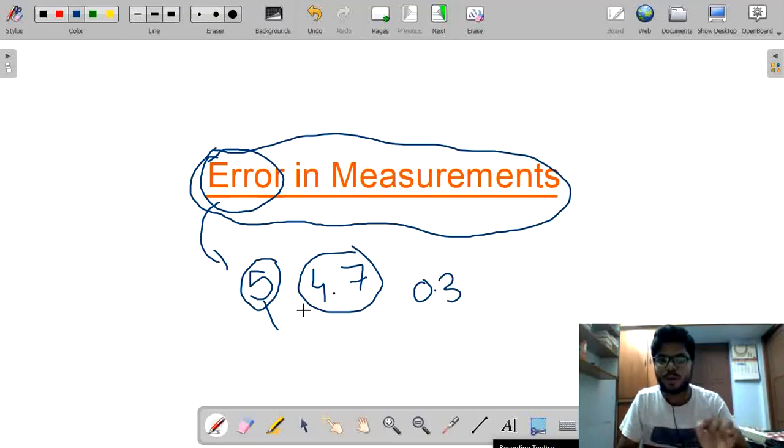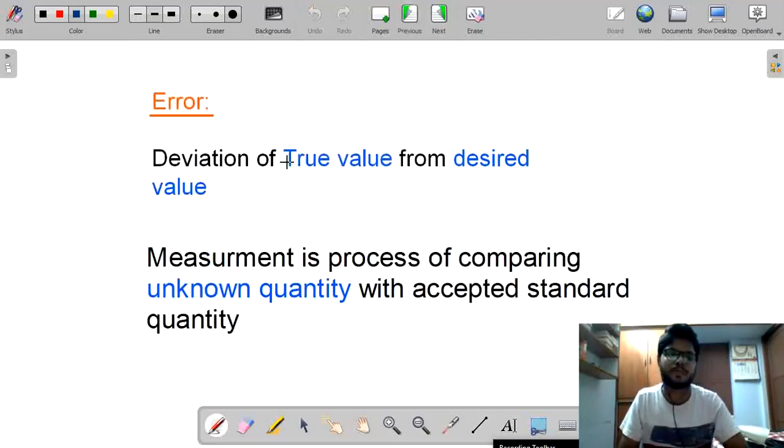Always remember, true value indicates our measured value. Now, Error is deviation of a true value, the value which we are getting, from desired value, the value which we need to get.